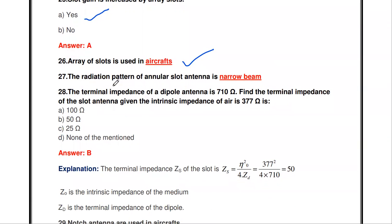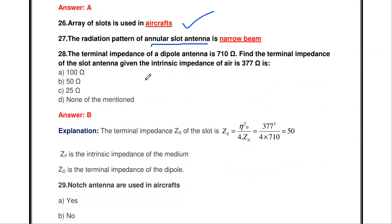The radiation pattern of an annular slot antenna is a very narrow beam with very narrow beam width.